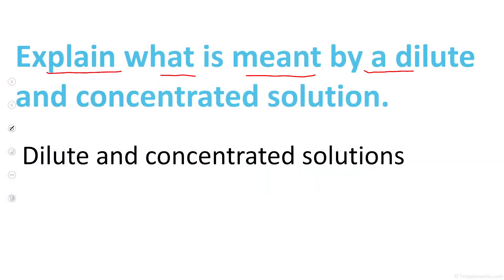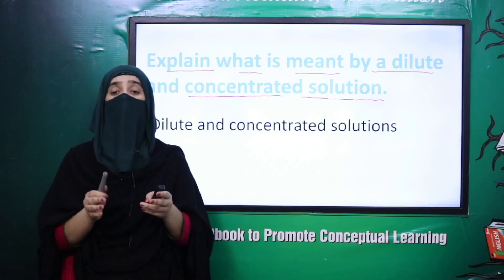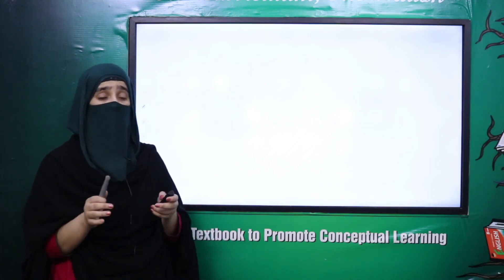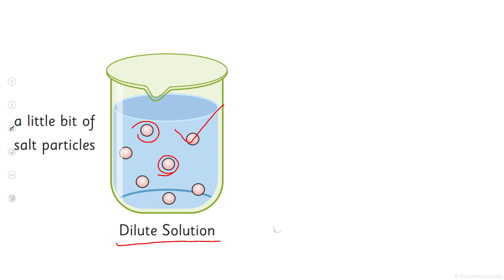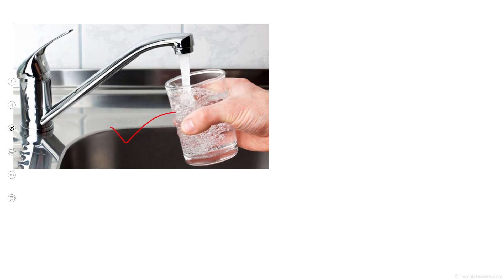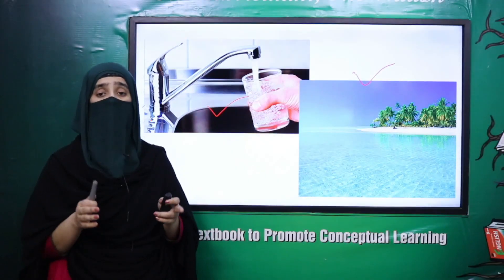Next is: explain what is meant by a dilute and concentrated solution. Hainne dekha ki dilute aur concentrated solutions kya hote hain. Woh solution jis mein solute ki amount relatively kam hoti hai, that is a dilute solution. Aur woh solution jis mein solute ki tadaat bahut zyada hoti hai, that is a concentrated solution. Daily life mein tap water that is a dilute solution kyunke us mein minerals ki tadaat kam hoti hai. Aur ocean water is a concentrated solution kyunke us mein salt aur minerals bahut zyada hoti hain.